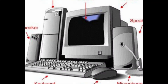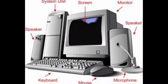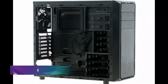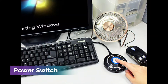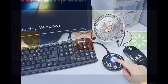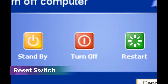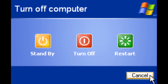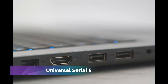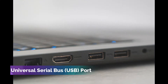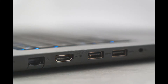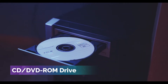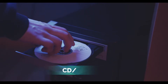External parts are the parts outside the system unit. The casing is the hard case that covers and protects the parts inside. The power switch is used to turn on the computer. The reset switch is used to restart your computer without turning it off, usually used when the computer hangs. The universal serial bus or USB port is the slot where USB devices such as flash drives are inserted. The CD/DVD ROM drive is where the CD or DVD is inserted.